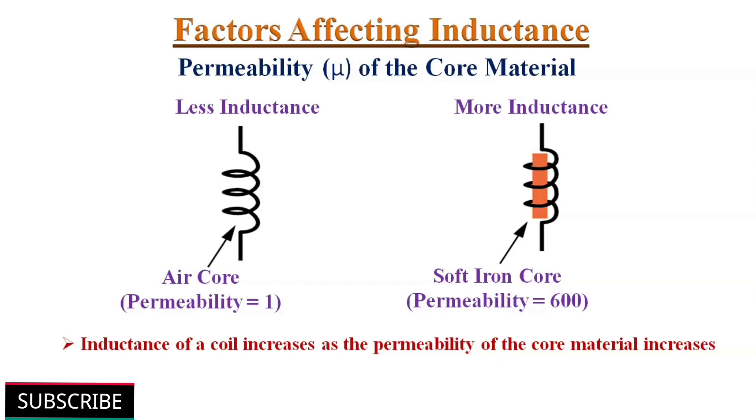Fourth one, permeability of the core material. The greater the magnetic permeability of the core on which the coil is wrapped around, the greater is its inductance. The less permeability of the core material, the less the inductance. For example, soft iron core has magnetic permeability of 600 as compared to air. So it can generate a greater magnetic field flux.